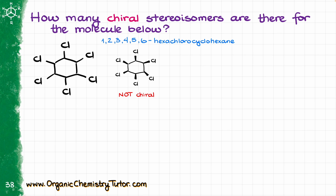How about now we take one of the chlorines and put it on the dash while keeping the rest on the wedge? Something like that. Is this molecule chiral? And the answer is no, this molecule is not chiral again, because we have a plane of symmetry going right through the middle of the molecule, straight up and down.